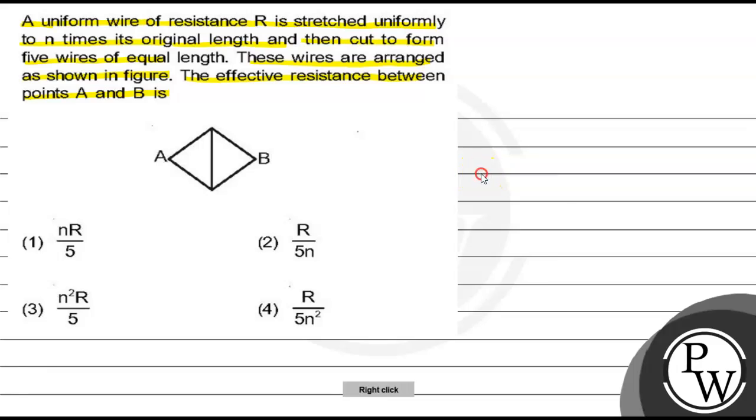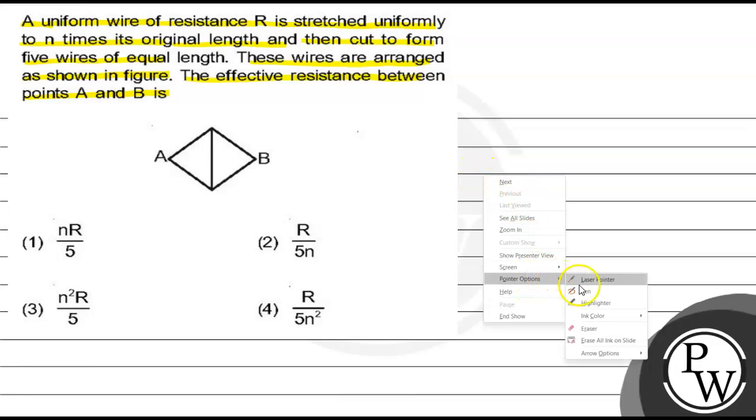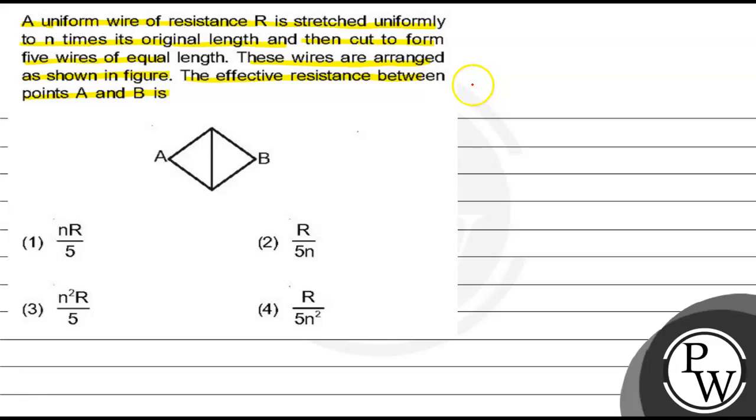So I am writing here. Before stretching the length of wire is L and area is A. R equal to rho into L by A, where rho we know that is resistivity.